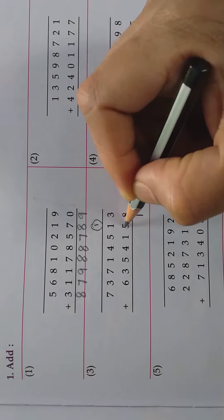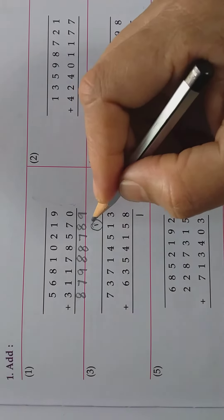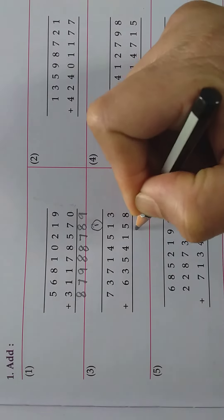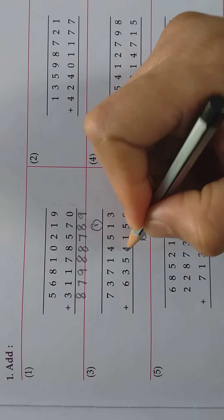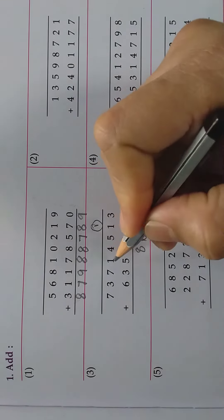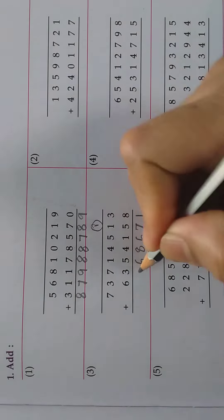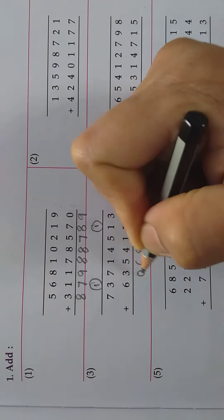1 plus 5 is 6, 6 plus 1 is 7. 5 plus 1 is 6. 4 plus 4 is 8. 1 plus 5 is 6. 7 plus 3 is 10, so 1 is the carry. 10.